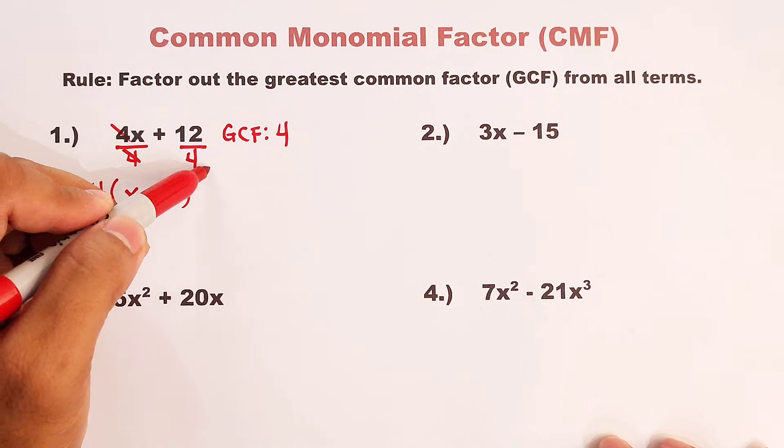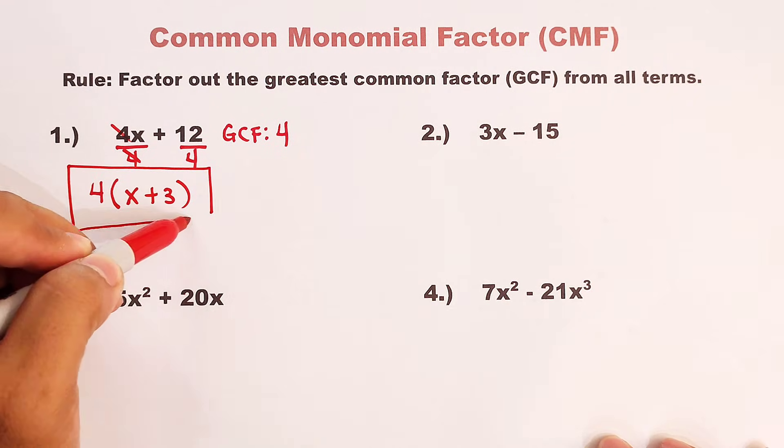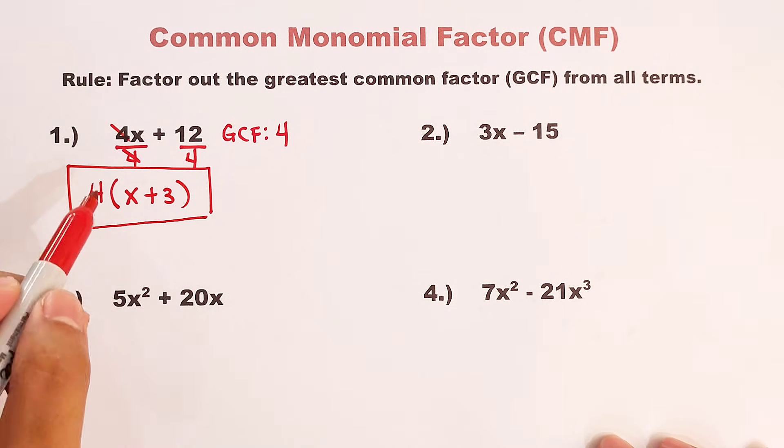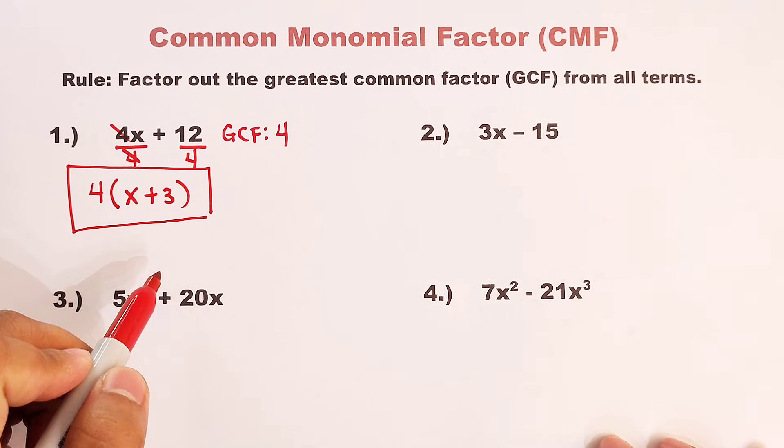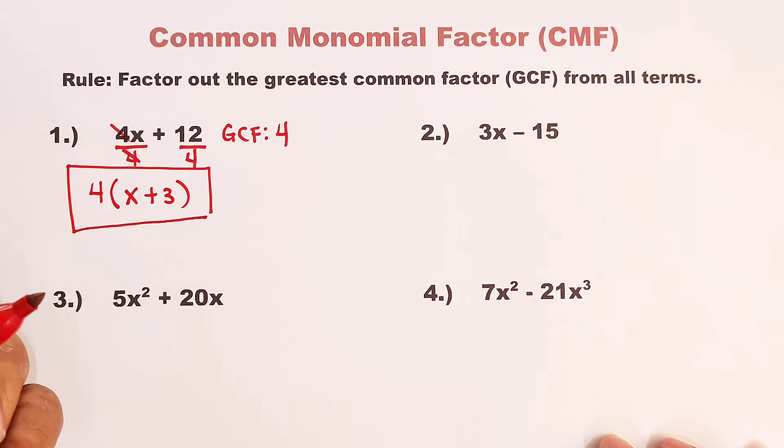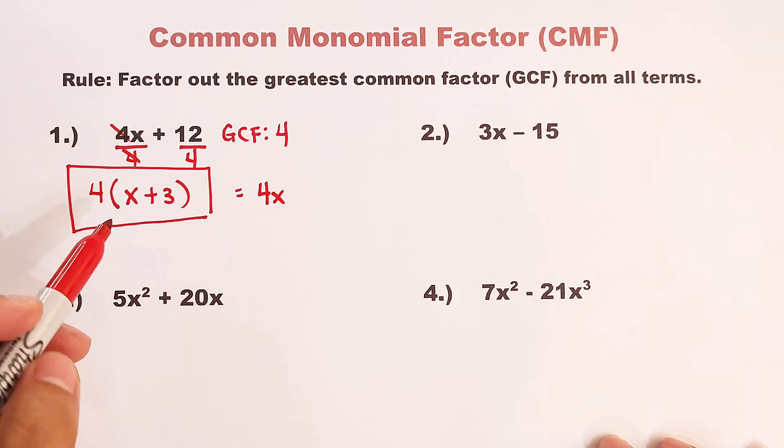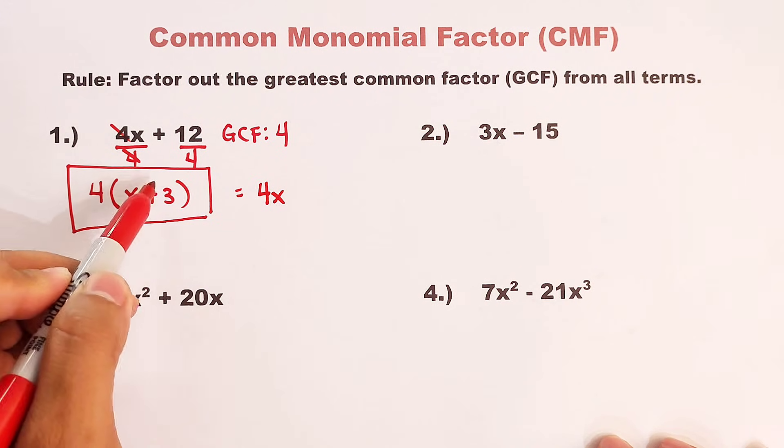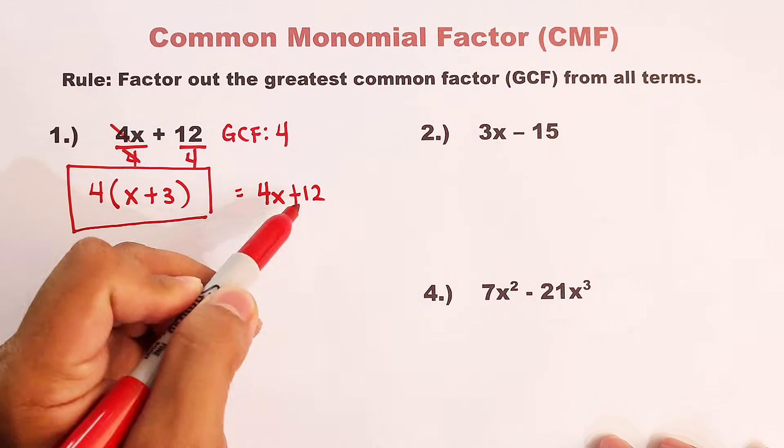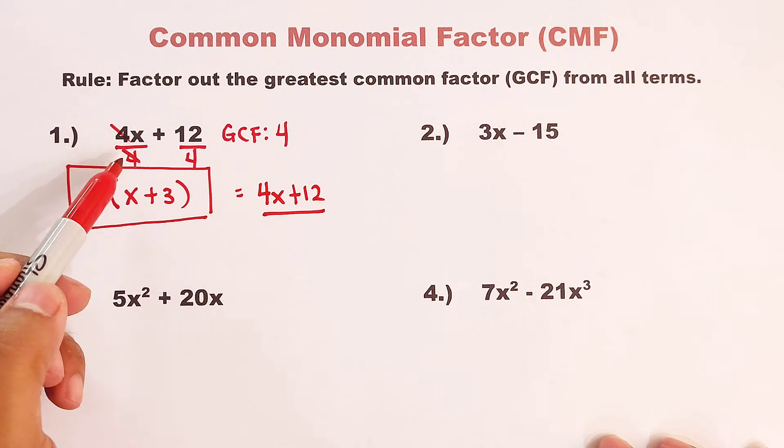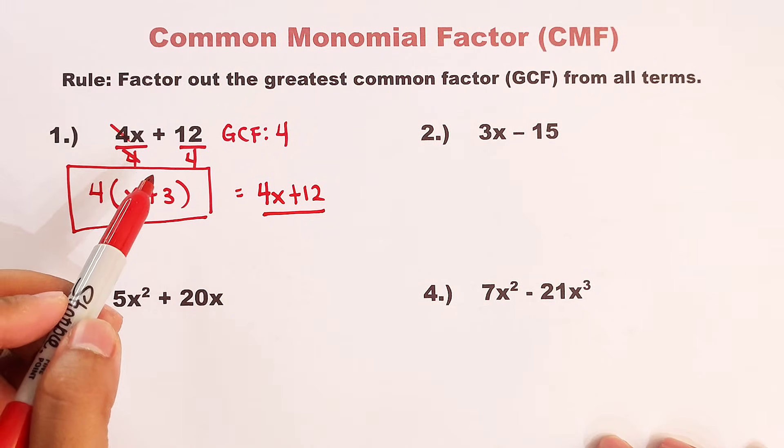And as you can see, this is now the factors of our first given polynomial. Now, if you want to check whether your answer is correct, we can simply use distributive property. Look, if you will multiply 4 times x, that would be 4x. If you will multiply 4 and 3, 4 times 3, that would be plus 12. And as you can see, that is the same from the original given.